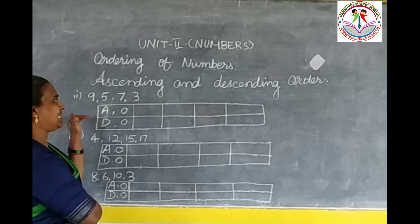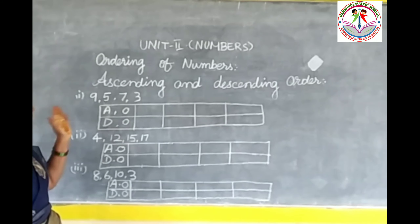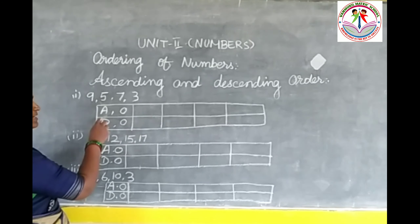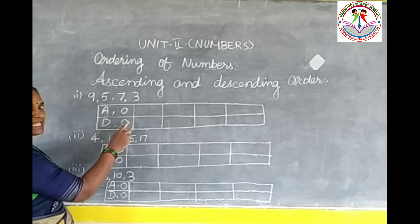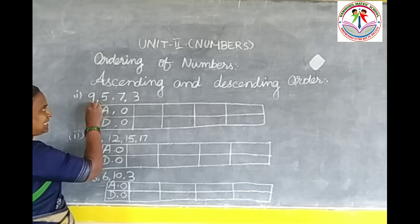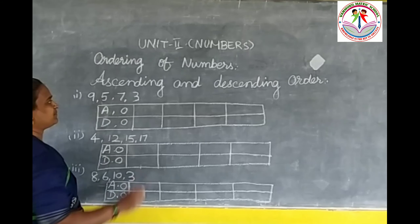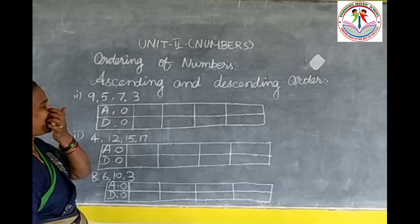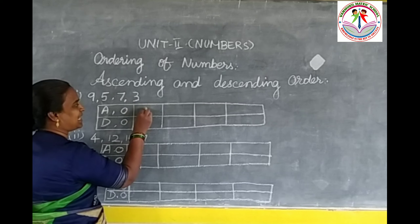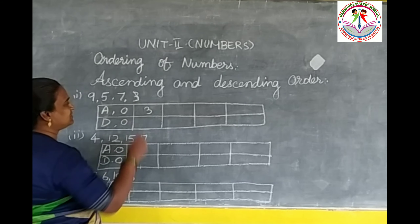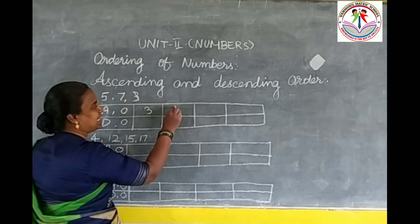Here the numbers are 9, 5, 7, and 3. In this, which is the smallest number? Very good — 3 is the smallest number.